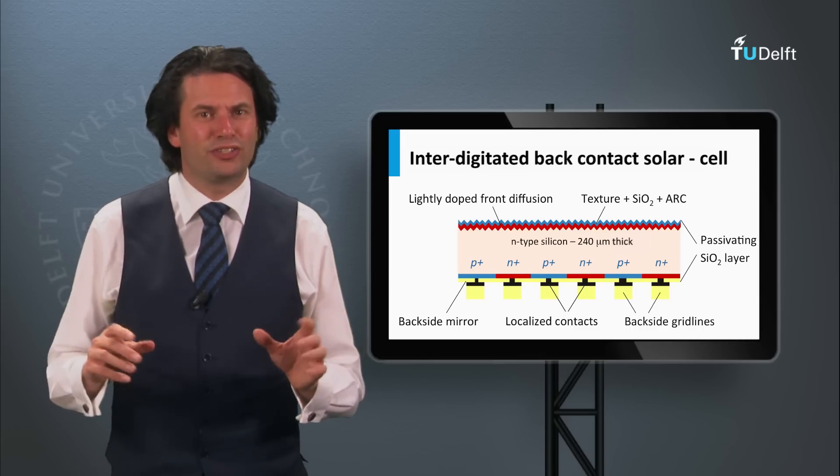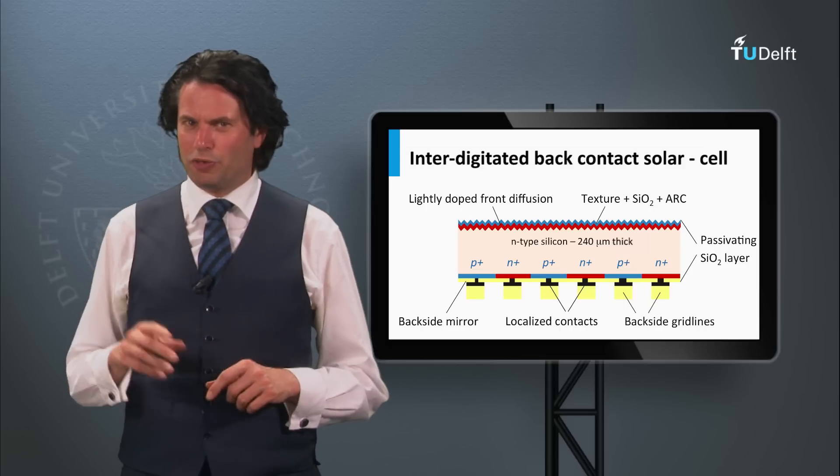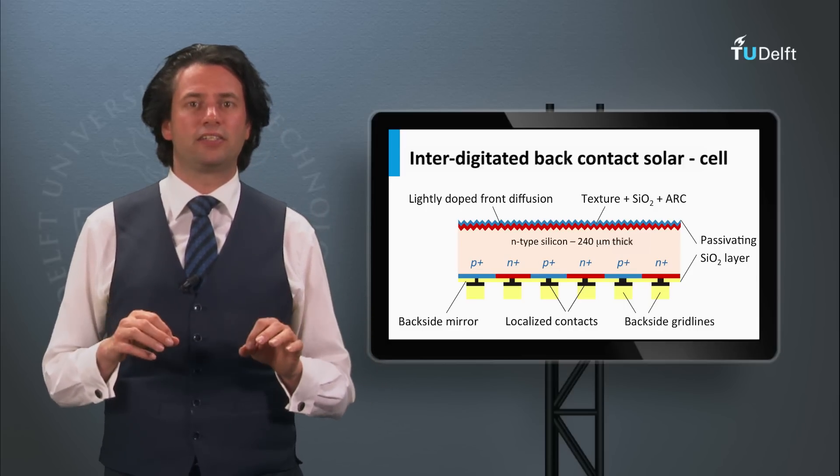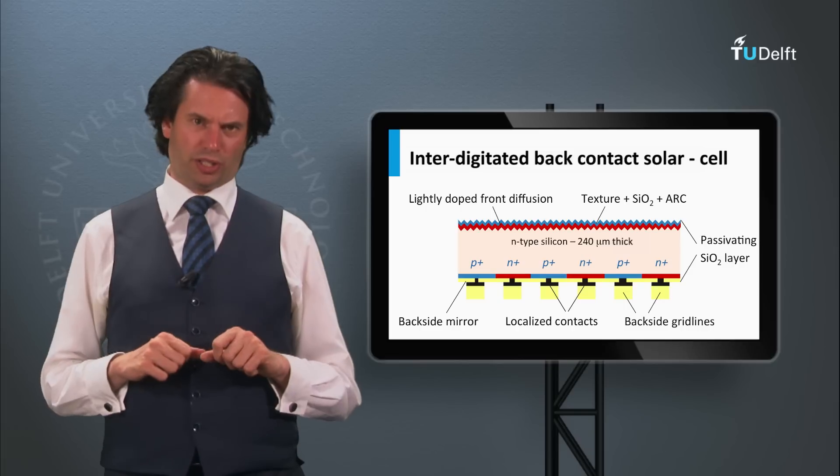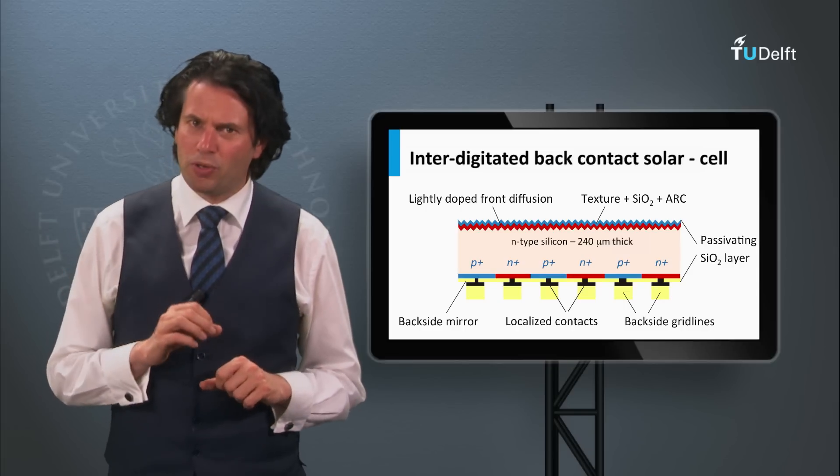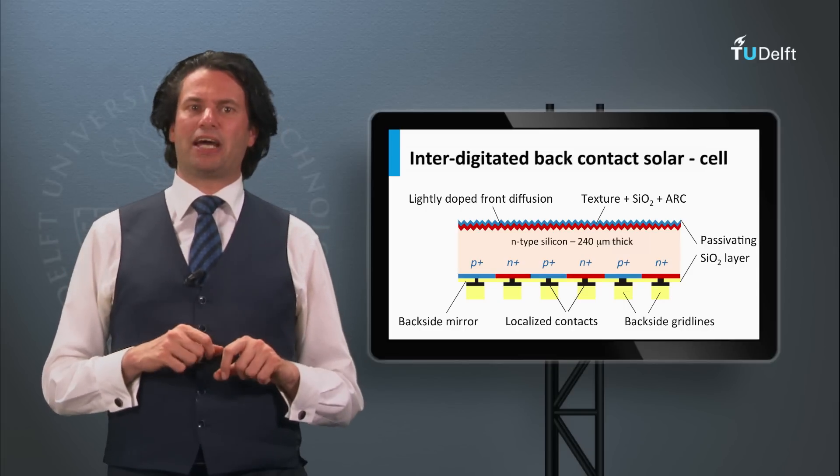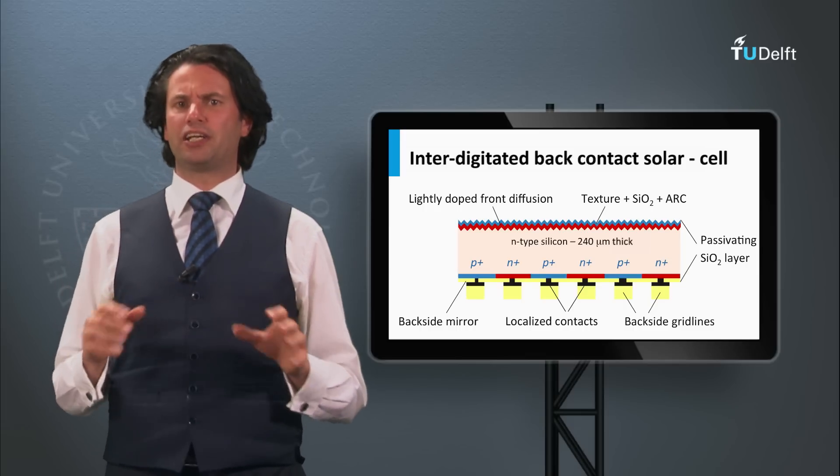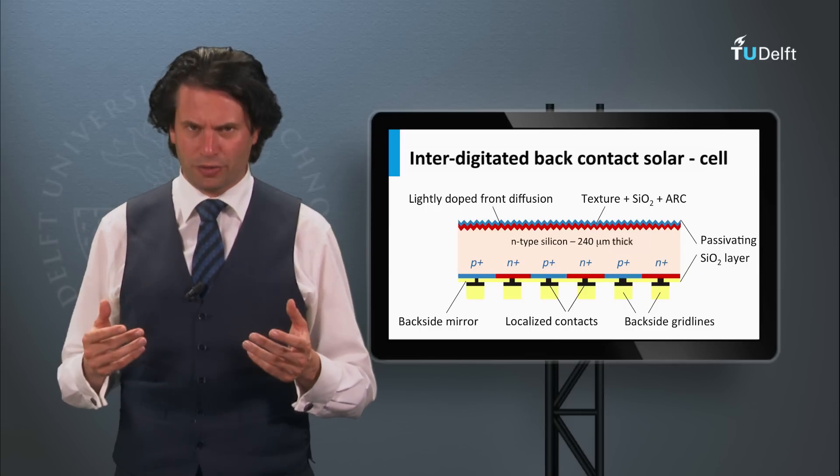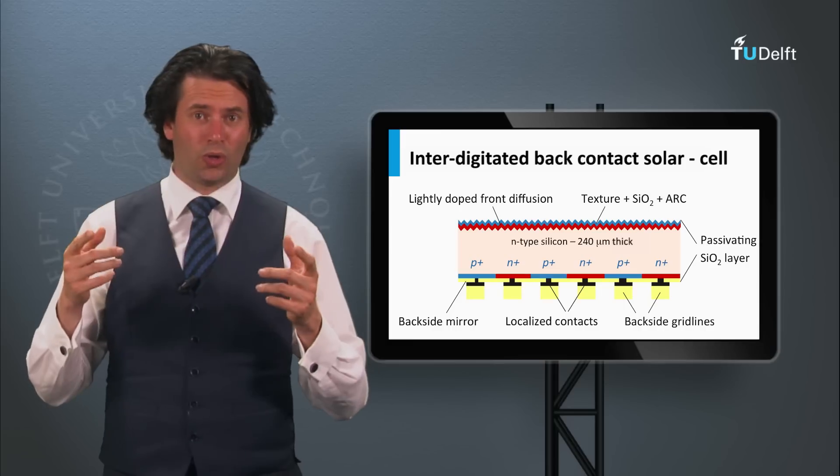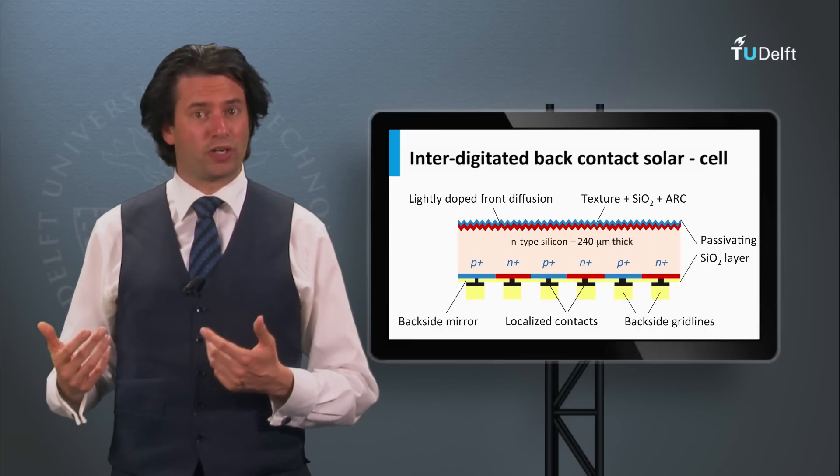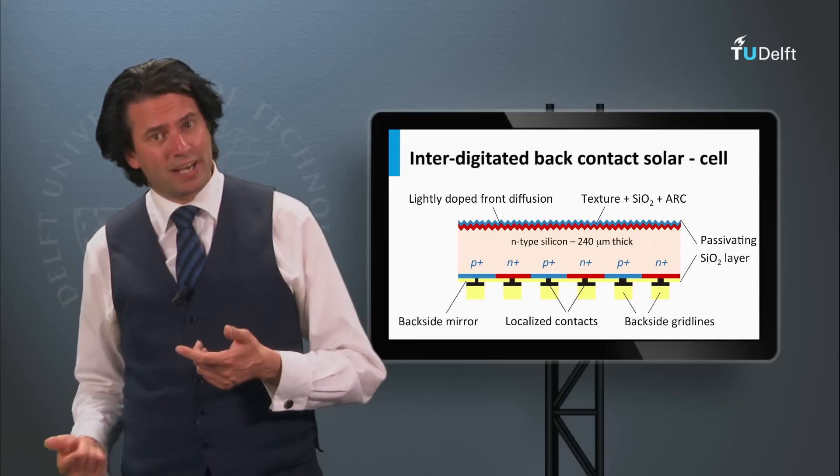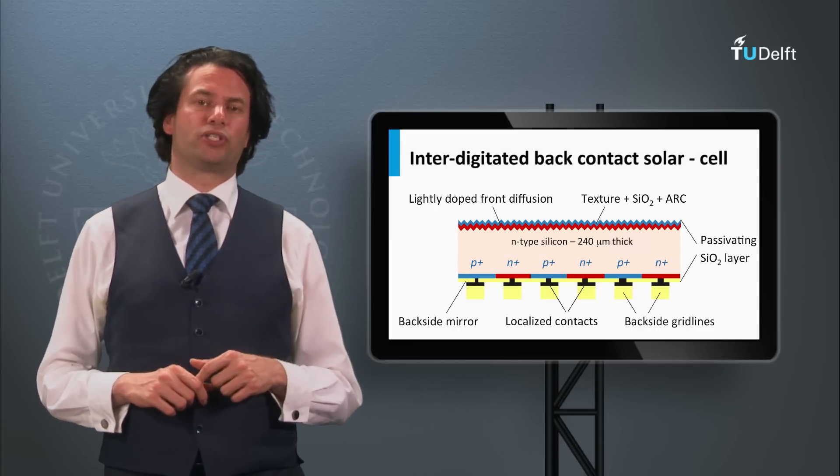A second successful cell concept, which is commercialized by SunPower, is the interdigitated back-contact solar cell. The principle of interdigitated back-contact concepts is that it does not suffer from shading losses of a front metal contact grid. All contacts responsible for collecting charge carriers at the N and P side are positioned at the back of the crystalline wafer solar cell.